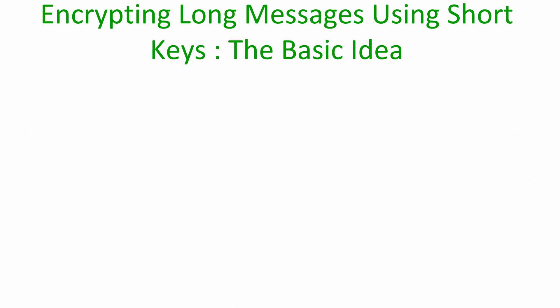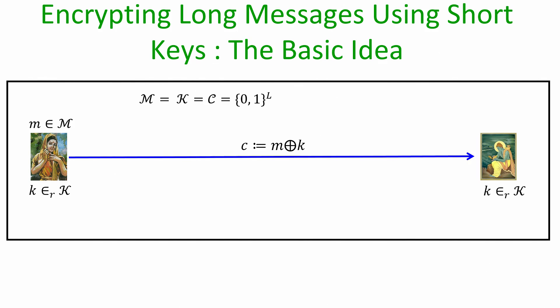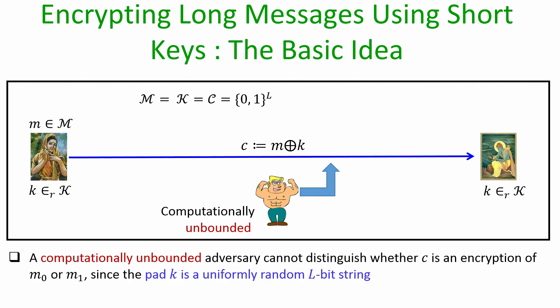The idea behind encrypting arbitrary long messages using short keys is as follows. Recall the one-time pad scheme where the message space, key space, and ciphertext space all consist of bit strings of length l bits. To encrypt a message of length l bits, sender and receiver agree upon a uniformly random key of size l bits. The sender performs the XOR of the message with the key, and the resultant ciphertext is communicated over the channel. This provides the strongest notion of secrecy — perfect secrecy — where a computationally unbounded adversary eavesdropping the ciphertext cannot distinguish whether it is an encryption of m0 or m1.